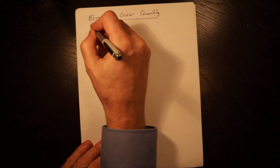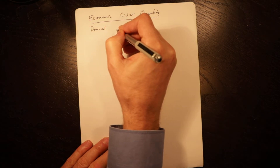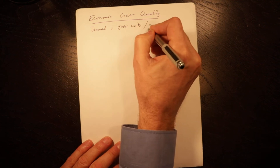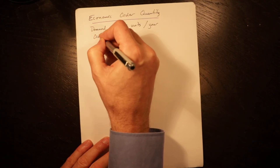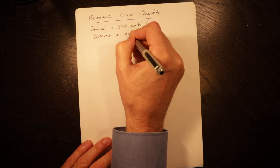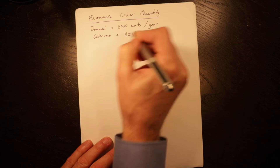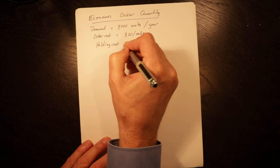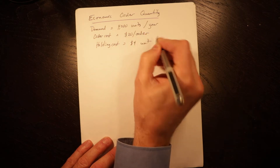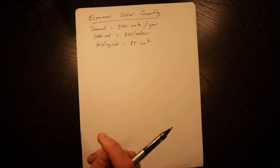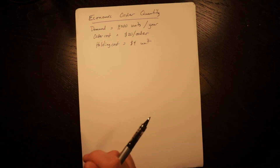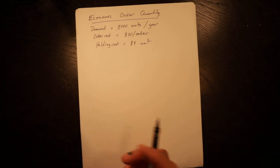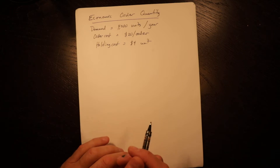We have a company whose demand is equal to 4,000 units per year. Order cost is equal to $20 per order, and holding cost is equal to $4 per unit. Holding costs can either be a percentage of acquisition cost or a fixed number. If it were a percentage of acquisition cost, you would calculate the number based on acquisition cost, but in this case we are using a fixed amount.